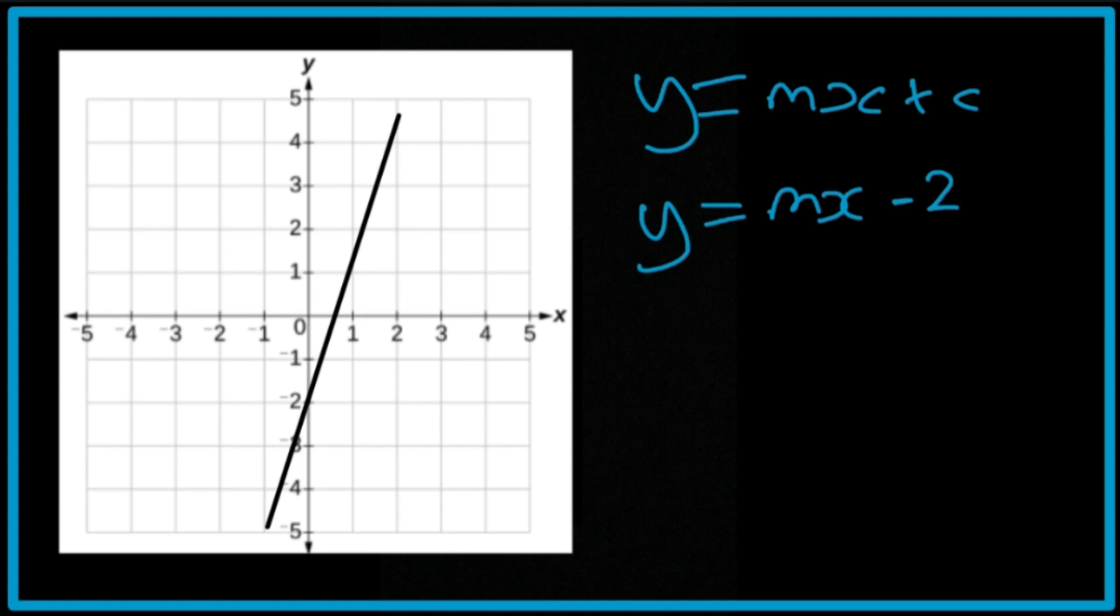And then I'm just going to use the rise-run method from the point that it intersects the y-axis. So I'm going to go, the run is 1, and the rise is 1, 2, 3. So that's 3 divided by 1, which is the same as 3.